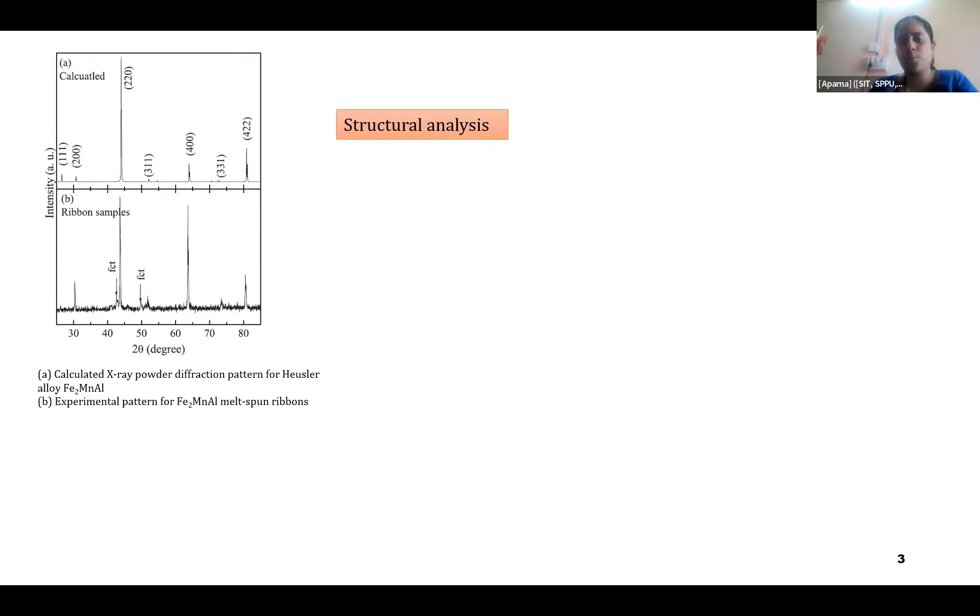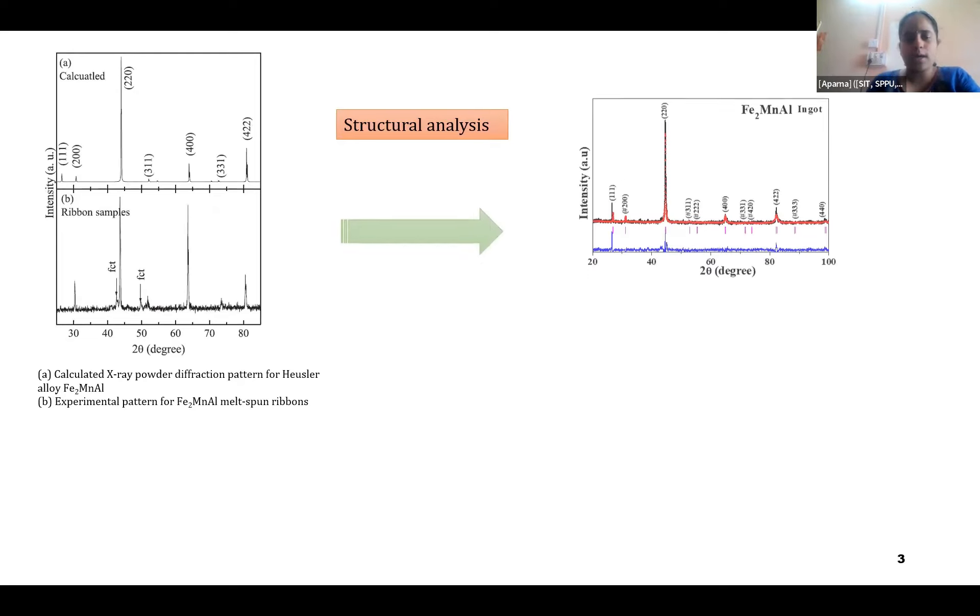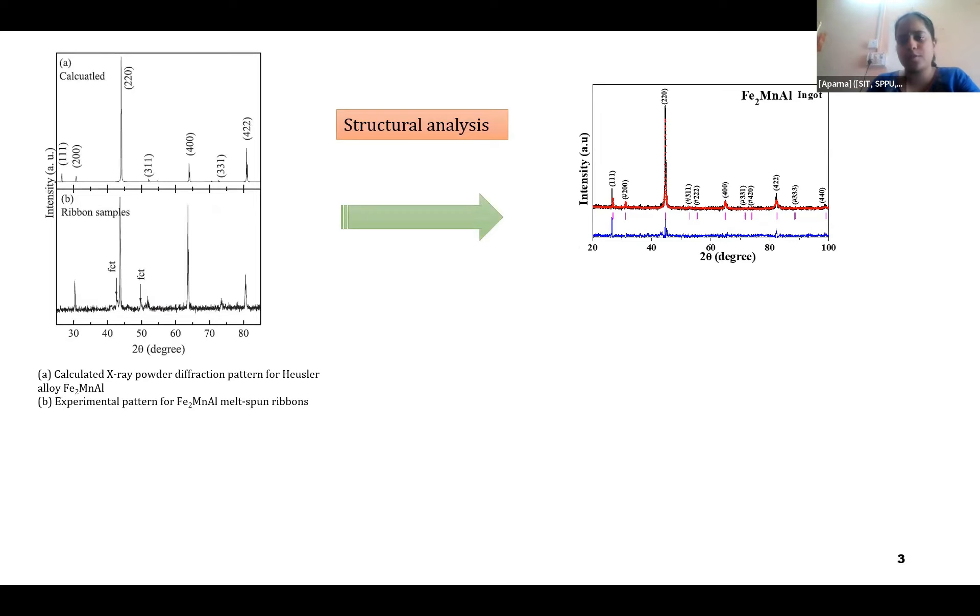They are B2 phase, that is, they have cubic interpenetrating cubic sublattices, and here they have been reported to have a B2 phase with minority FCT phases. So what I have obtained was also similar to that kind of structure, with all the predominant peaks where (2,0) peaks were obtained, which is the superlattice, which shows that this is a B2 phase.